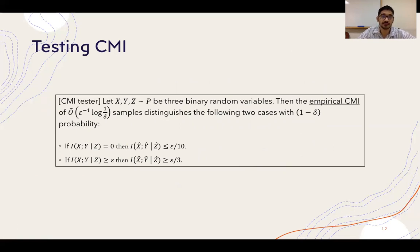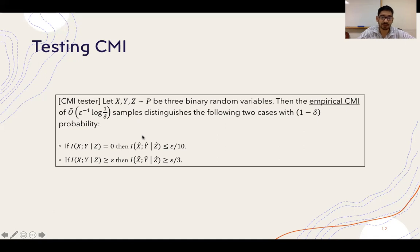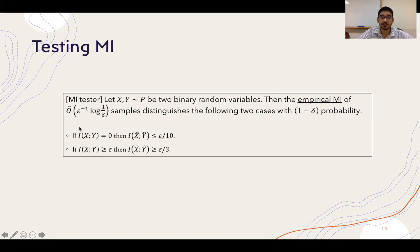We show the following testing result. Let x, y, z be three variables distributed jointly according to some distribution p. Then the empirical conditional mutual information from roughly 1/epsilon samples distinguishes the following two cases with high probability: if the conditional mutual information is exactly 0, the empirical value stays at most epsilon/10; if the conditional mutual information is at least epsilon, the empirical value is at least epsilon/3, giving a Theta(epsilon) gap. For simplicity in this talk, we focus on a tester for mutual information with the same guarantees, dropping the conditioning variable z.